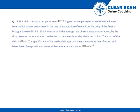A child running a temperature of 101 degrees Fahrenheit is given an antipyrene, which is a medicine that lowers fever, causing an increase in the rate of evaporation of sweat from the body. If the fever is brought down to 98 degrees Fahrenheit in 20 minutes, what is the average rate of extra evaporation caused by the drug? Assume evaporation is the only mechanism by which heat is lost.